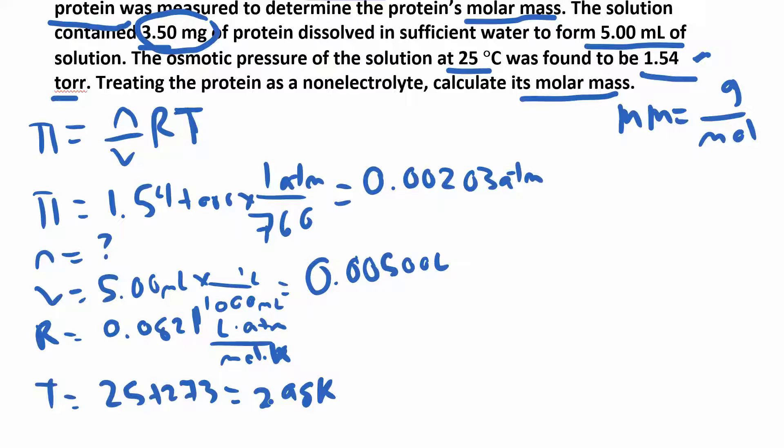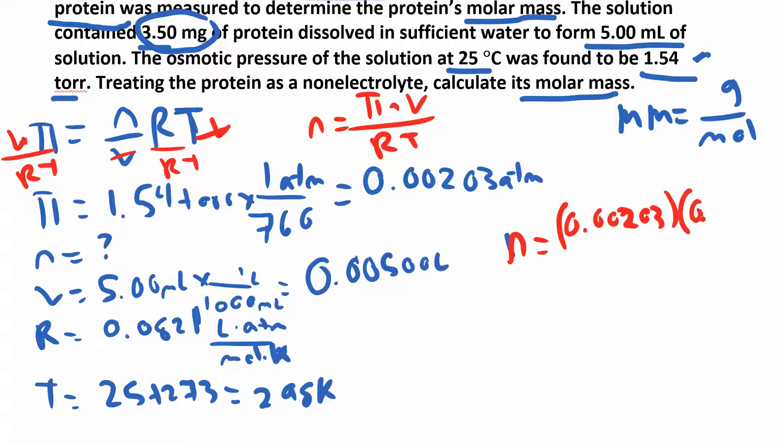Now we can plug everything in. I'll rearrange the equation to solve for moles: multiply both sides by volume and divide by RT, so n = πV/(RT). Plugging in: n = (0.00203)(0.005)/(0.0821)(298). When you work that out, you get 4.14 times 10 to the negative 7 moles.